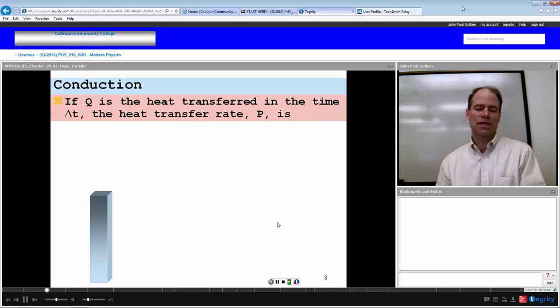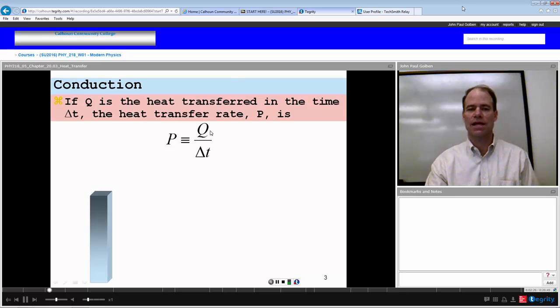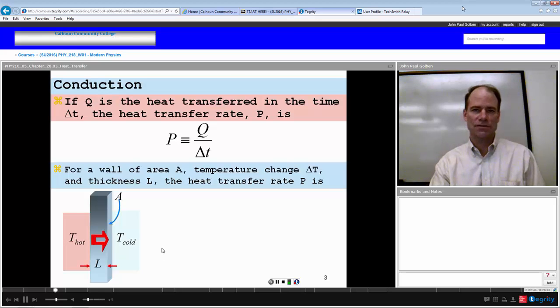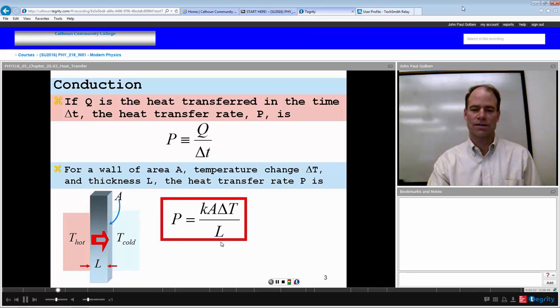For conduction, if Q is the heat transferred and we do it in a time delta T, we can think about power. Power is energy per time, in this case it would be the heat transferred per time. If we consider a wall with an area A, a temperature change between the two sides of the wall of delta T, and a thickness L, then the heat transfer rate through this wall is equal to K times A times delta T over L. And that would be the power transferred, K-A-T over L.